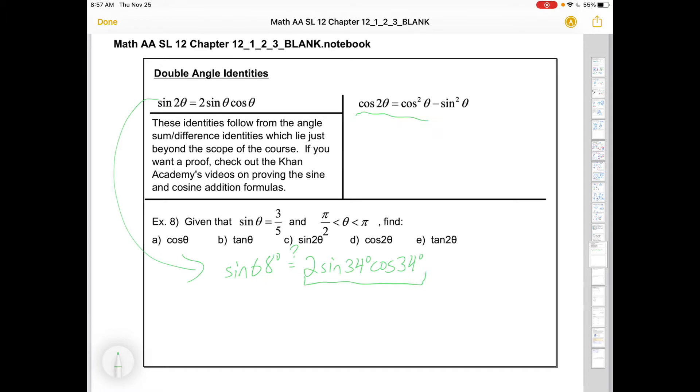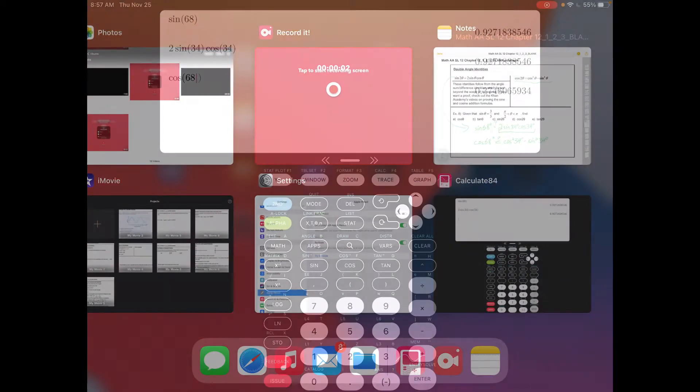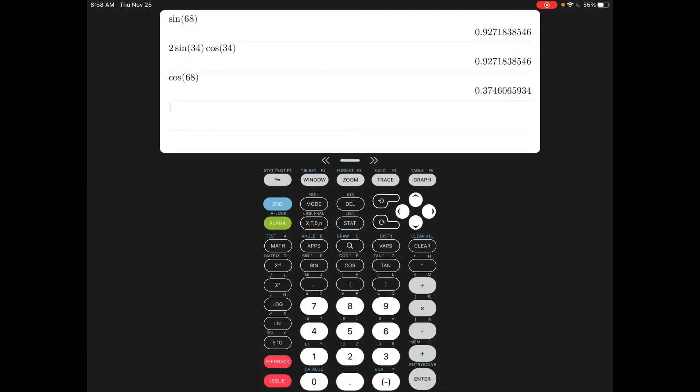Similarly, we're going to have this identity for cosine. Is cos 68 equal to the cosine squared of 34 minus the sine squared of 34 degrees? Let's find out. Cos 68 is that. I need some extra brackets here, so I'll type cos 34, close, close, squared, minus bracket sin 34, close, close, squared.